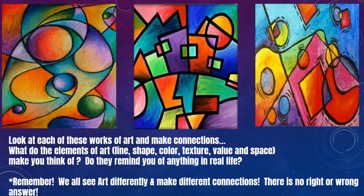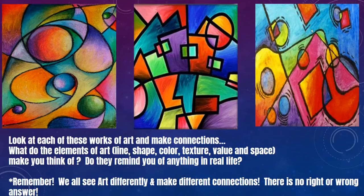Now we're going to look at these three works of art and make connections. I'd like you to ask yourself: what do the elements of art — line, shape, color, texture, value, and space — make you think of? Do they remind you of anything in real life? Remember, we all see art differently and make different connections. There is no right or wrong answer.